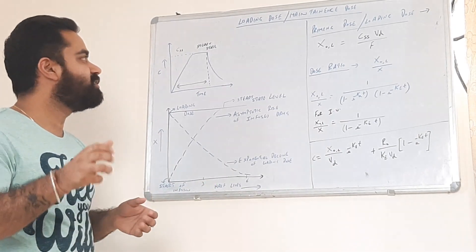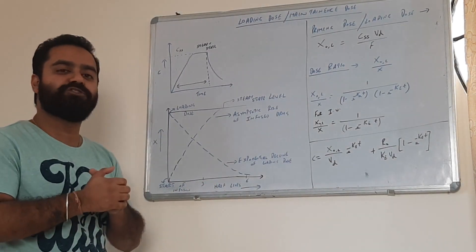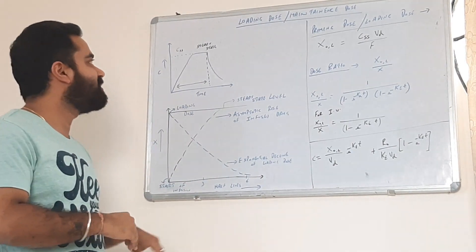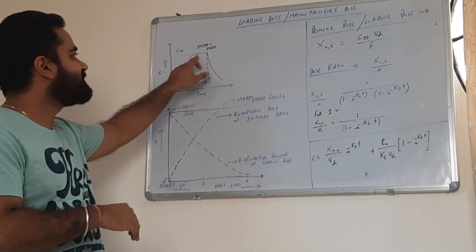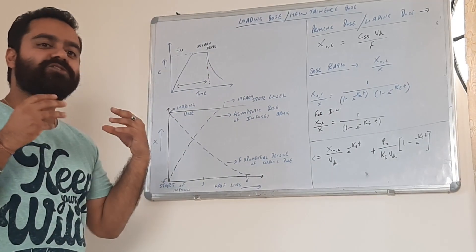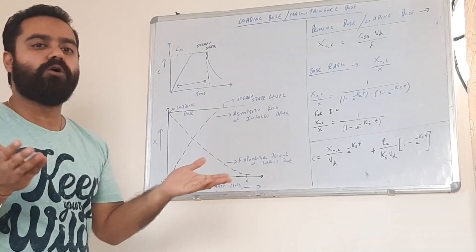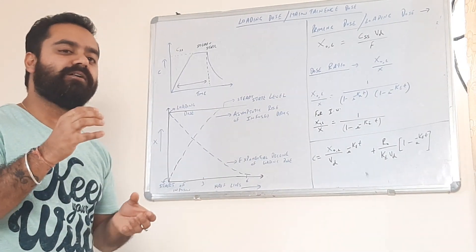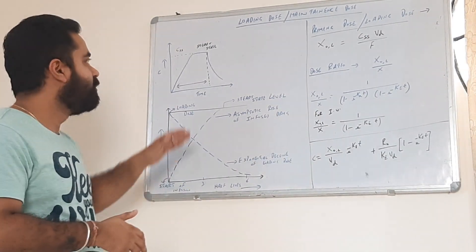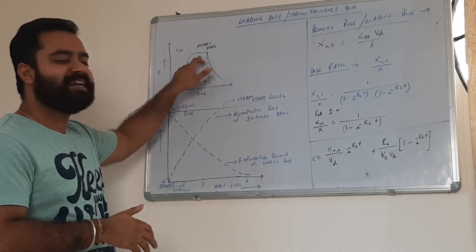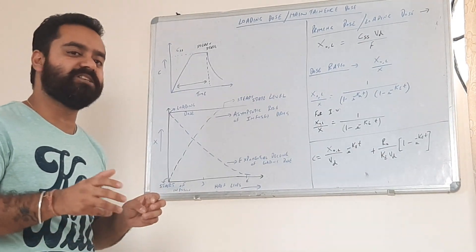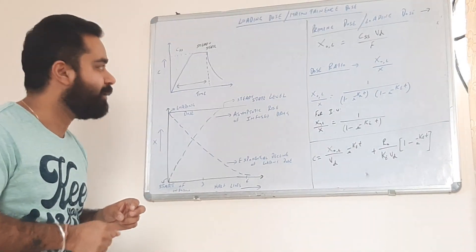In order to achieve therapeutic efficiency or therapeutic activity, the drug must reach the steady state. But drugs which have a very long half-life, it is going to take a very long time to achieve this steady state and hence to achieve therapeutic efficiency or activity.